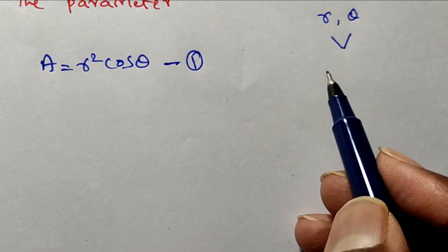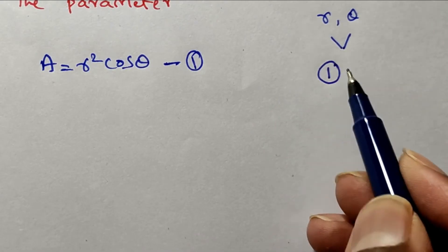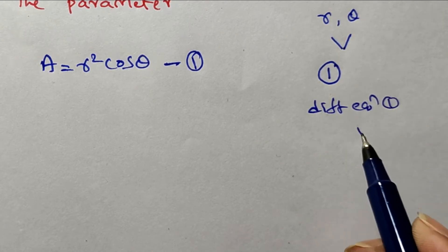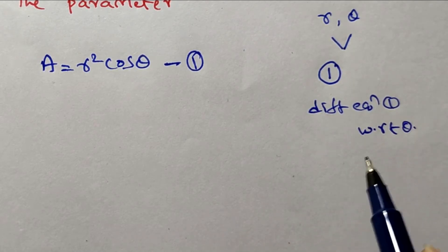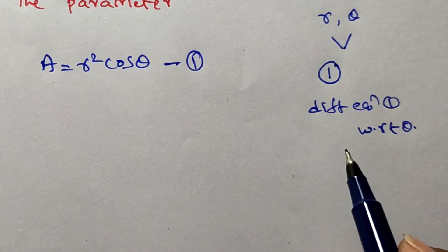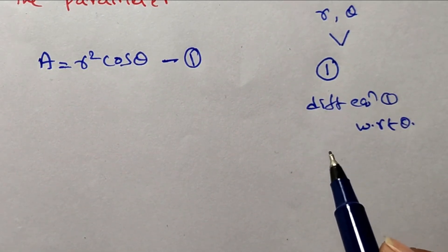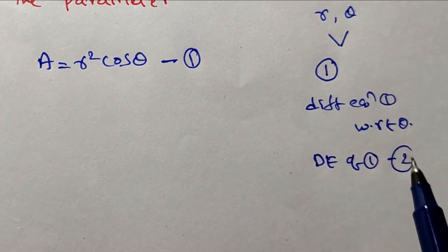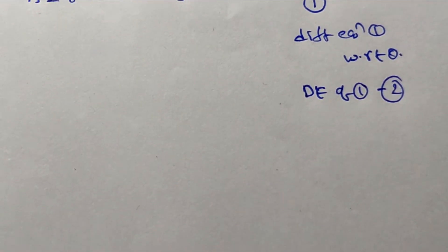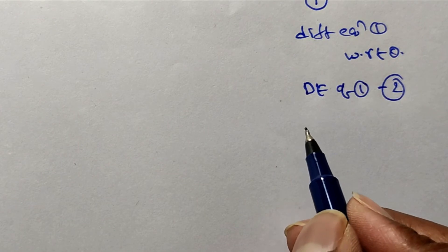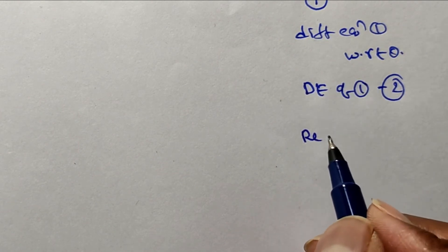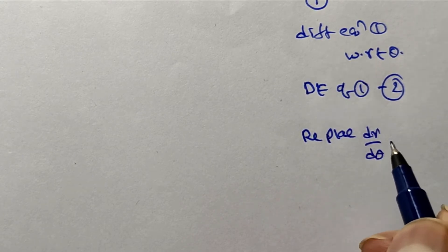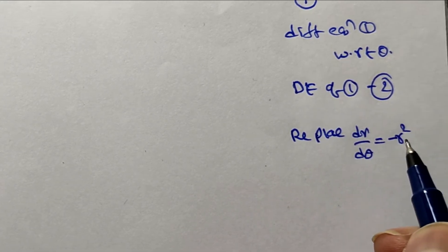First, we consider the given function as equation number one. Then we differentiate equation one with respect to θ and eliminate the parameter or arbitrary constant to get the differential equation — consider that as equation number two. To find the orthogonal trajectory, we replace dr/dθ with −r² · dθ/dr.